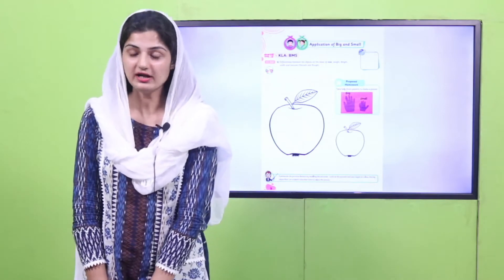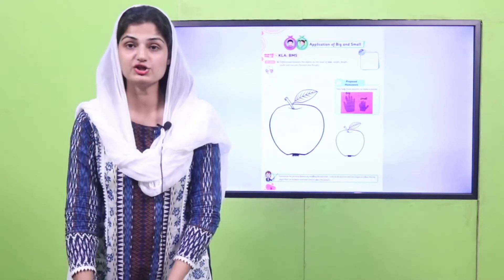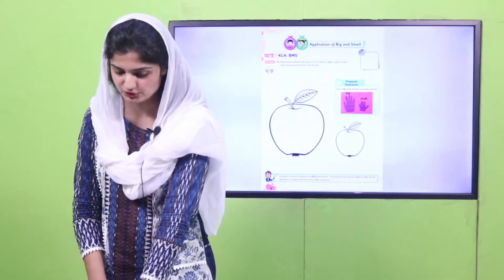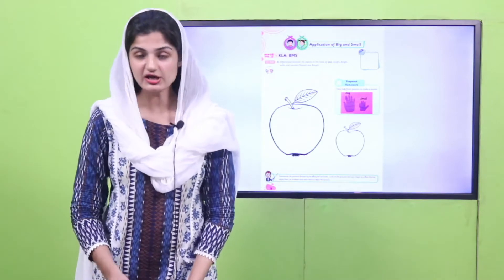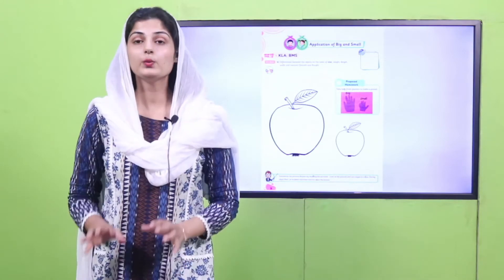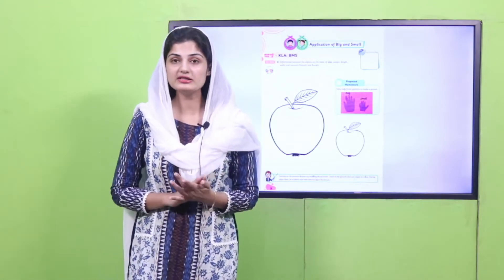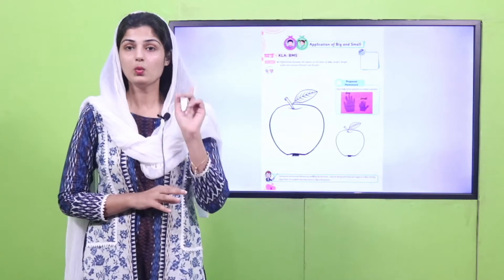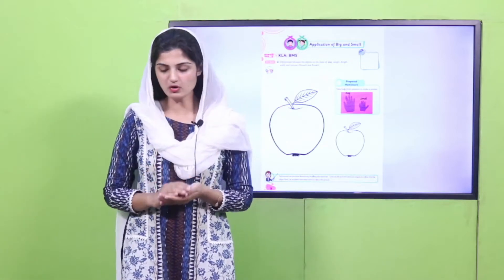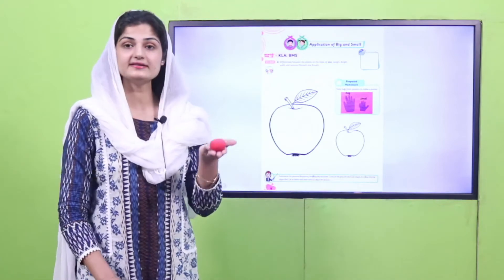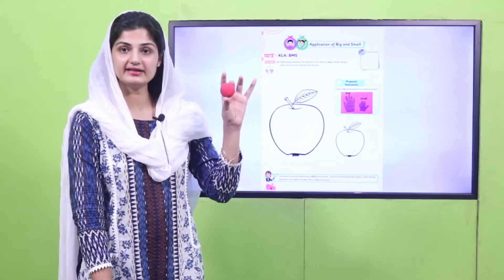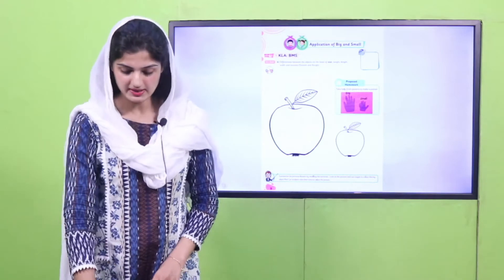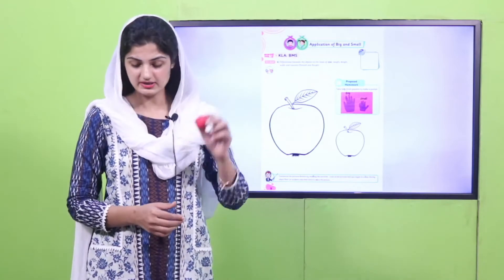In the previous lesson, we compared the size of cups — I showed you a bigger cup and a small cup. We also made balls with play-doh: we rotated the play-doh in our palms and made two balls — one big and one small. Here is my craft: I made a big ball in red color and a small ball.